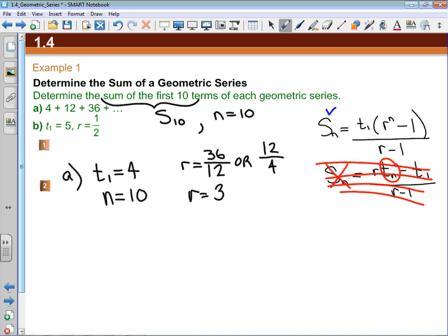Using the equation that I checkmarked, I'm going to say that the sum of 10 terms equals Term 1, which is 4, times the common ratio 3 to the power of 10, and then that negative 1 is not in the exponent.